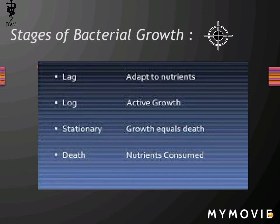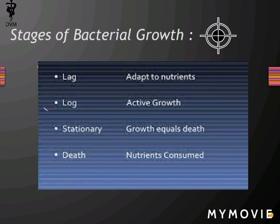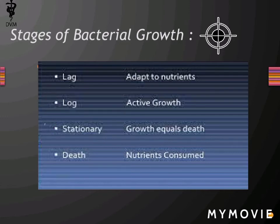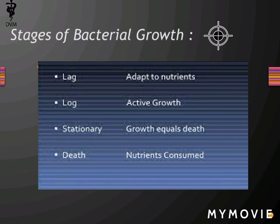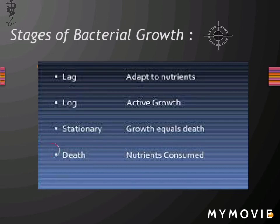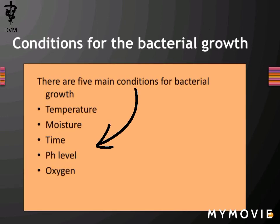In summary: in the lag phase, cells adapt to nutrients; in the log phase, there is rapid growth of cells; in the stationary phase, growth equals death; and in the death phase, nutrients are consumed.